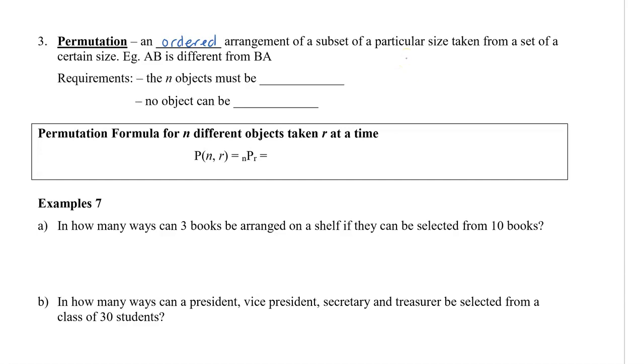Actually, it can be all of the set or it can be part of a set. What I mean by ordered is that AB is different from BA. Some other requirements is that the n objects must be all different or distinct. So there can't be anything that's the same, and no object can be repeated.